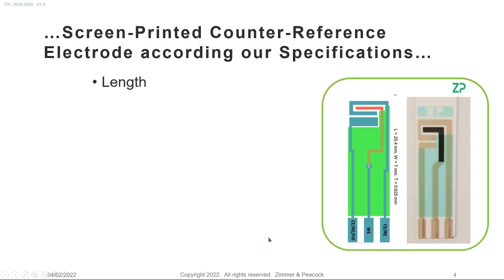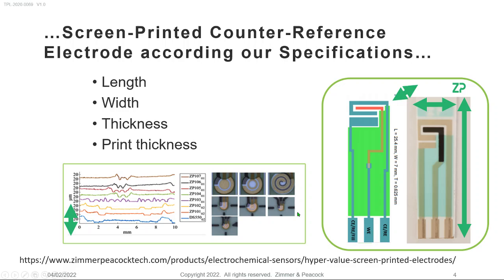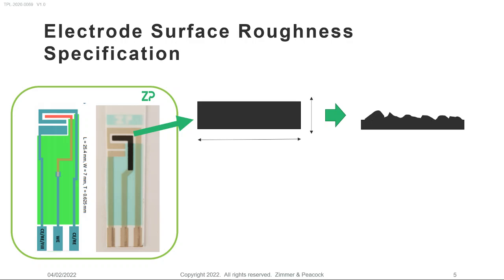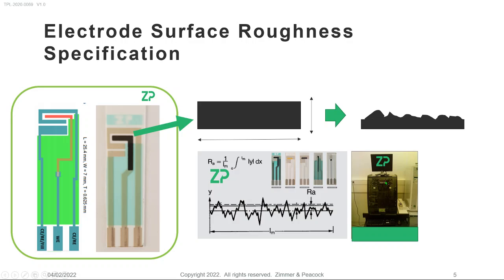When someone requests a screen printed electrode, the first thing that comes in is a request with gross dimensions — certain length, width, thickness, print thickness. What is rarer is that people come in and specify electrode roughness. That's OK because it can be measured, but we have seen situations where people switch from one manufacturer to another and, though everything is grossly the same, the electrodes have different roughnesses, so sensitivities or baselines all jump up.